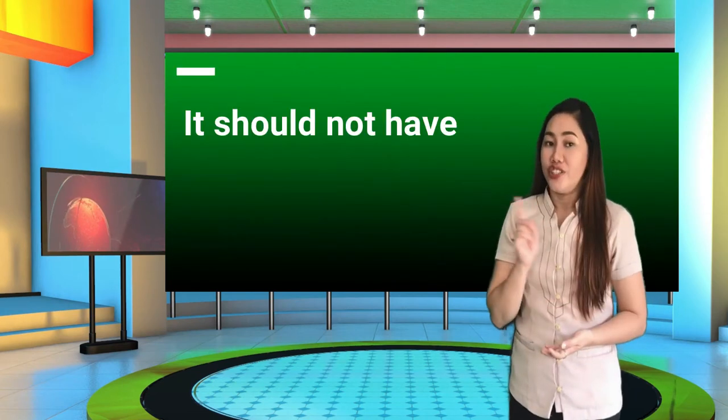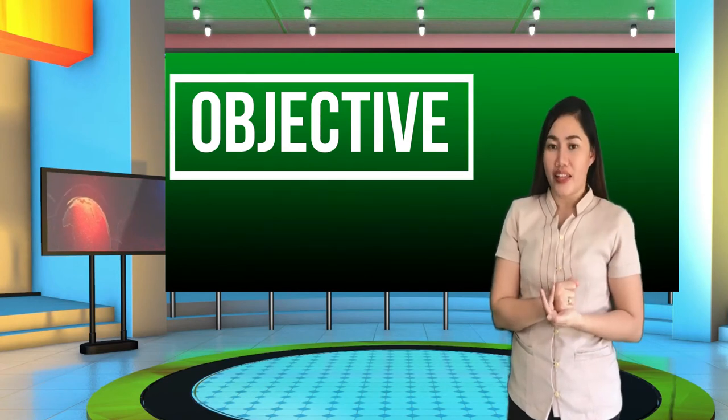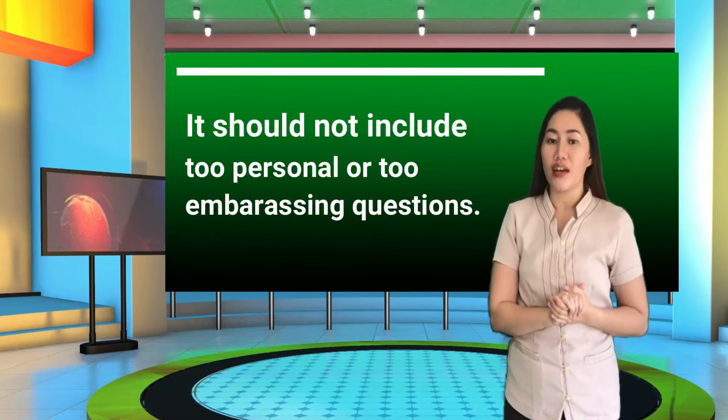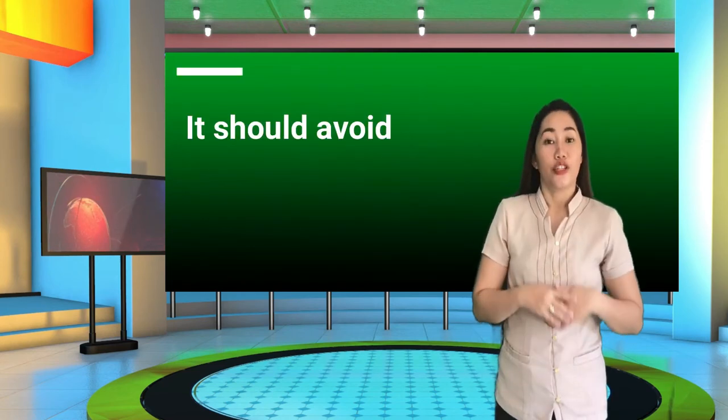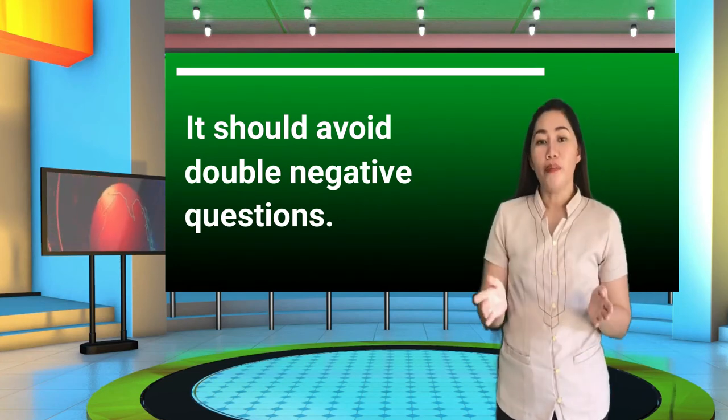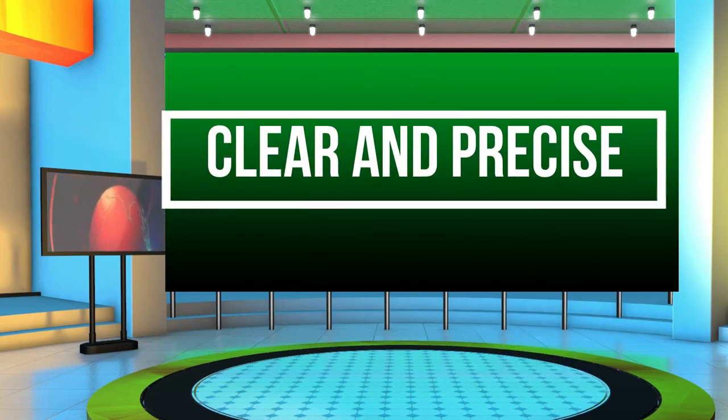Tip number eight: it should not have any bias. Questions should be objective and lead to an honest answer. The respondents may fail to give a truthful response if the question is biased. Tip number nine: it should not include too personal or too embarrassing questions. Questions should be gender and culturally sensitive so that respondents will not feel awkward or embarrassed. Tip number ten: it should avoid double negative questions. Double negatives may occur when respondents are asked about their stance on a certain issue, and this should be avoided so that responses will be clear and precise.